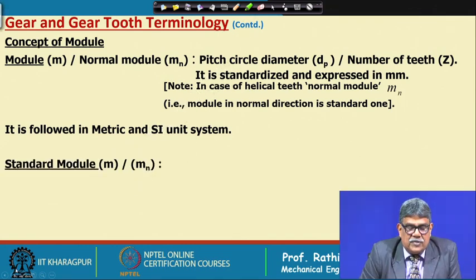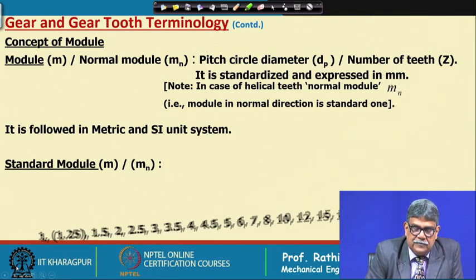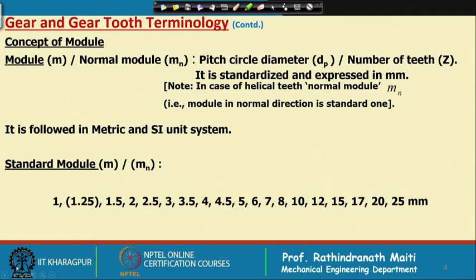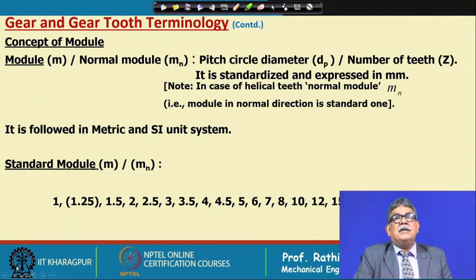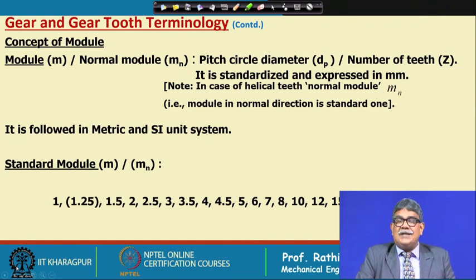Standard modules are 1, 1.25, 1.5, 2, 2.5, 3, 3.5, 4, 4.5, 5, 6, and so on up to 25, all expressed in millimeters. Although 1.25 is a standard module it is rarely used and is kept in parentheses. It is worth mentioning that for industrial gears, modules are normally not less than 2.5. Modules below 2.5 are for small and precision gears, which are usually used for motion transmission and mostly not for power transmission.